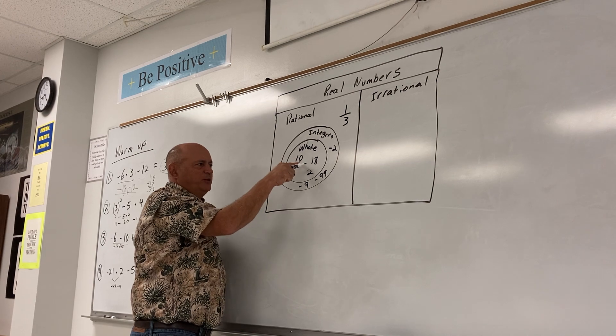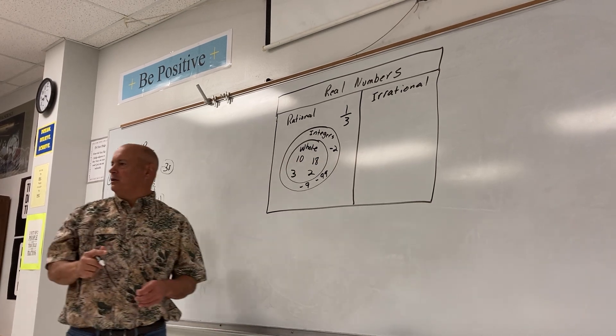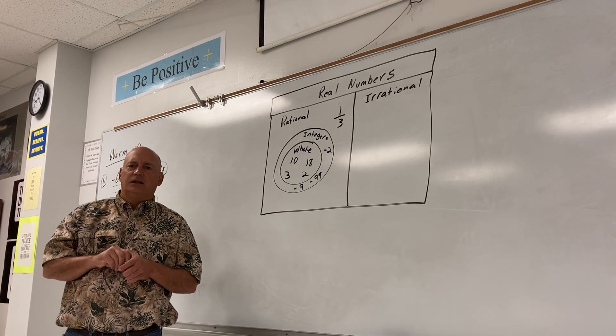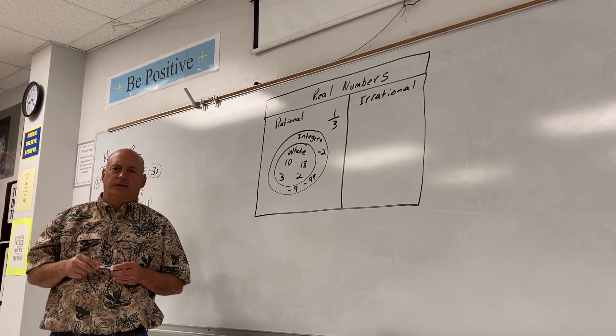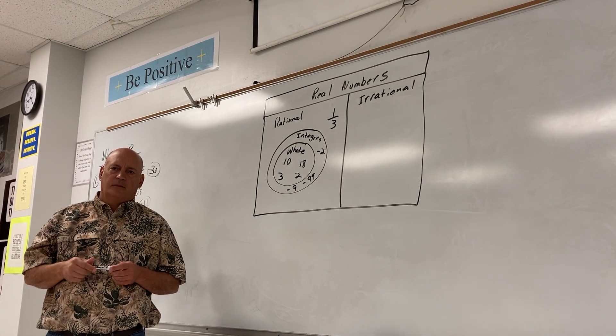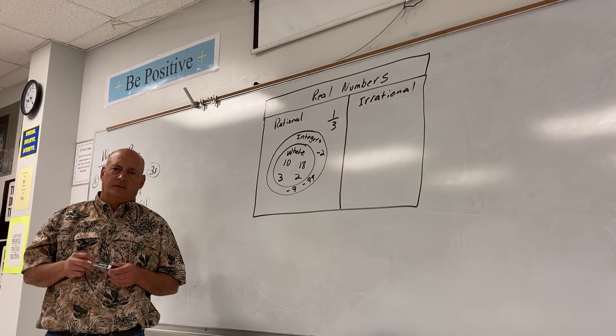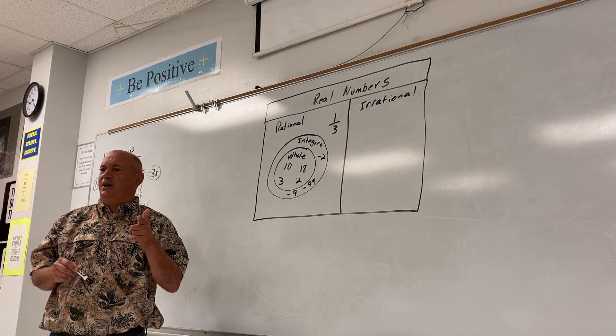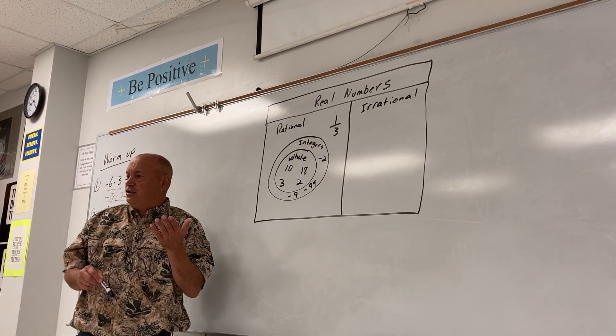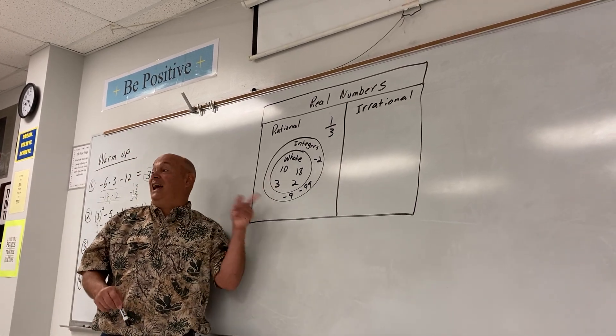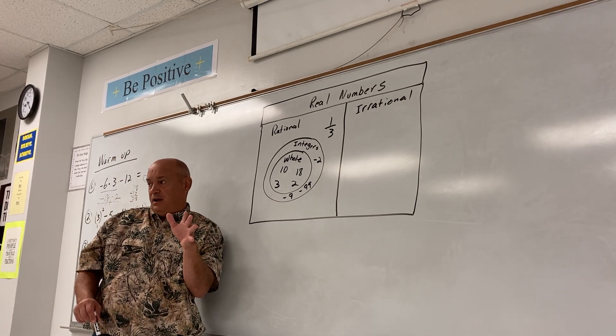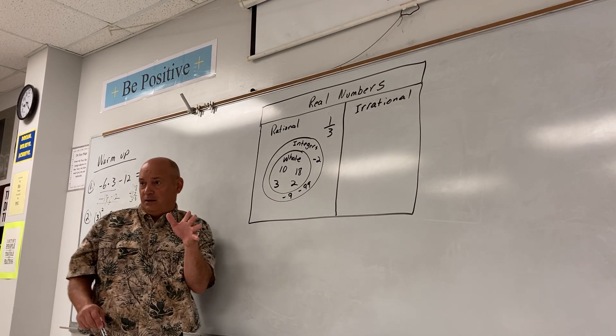What's the difference between whole numbers and integers? Lizzie? Whole numbers are different than integers because integers is the positive and negative whole numbers. Good. That's a great definition. Integers are positives and negative whole numbers. Whole numbers don't have negatives.